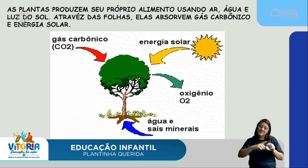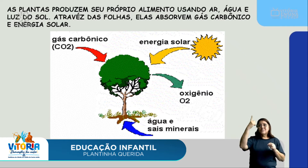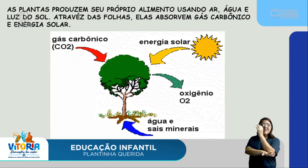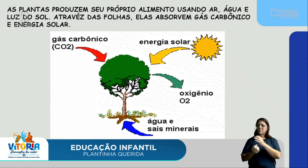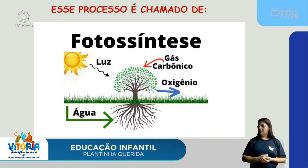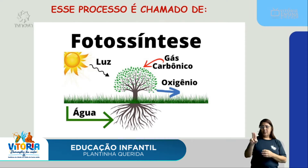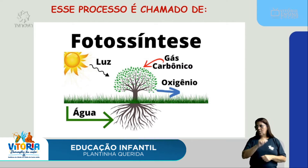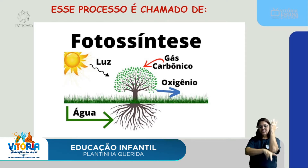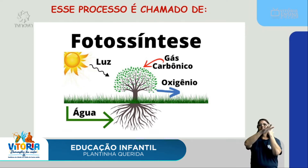Através das folhas, elas absorvem o gás carbônico, que é o ar, e a energia do sol. E a raiz absorve da terra a água e os sais minerais. Então, a partir daí, elas fabricam o seu próprio alimento. Esse processo de fabricação do próprio alimento é chamado de fotossíntese. Pela imagem vocês podem observar a luz do sol, o gás carbônico e a água que ela absorve pela raiz. Em seguida, a planta libera oxigênio para a gente poder respirar. Vejam como as plantas são importantes.